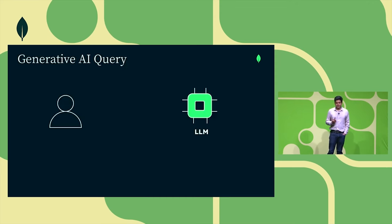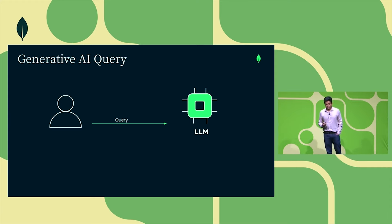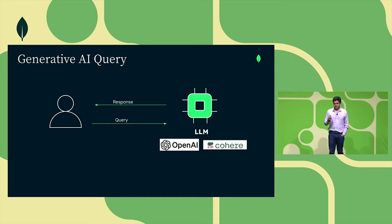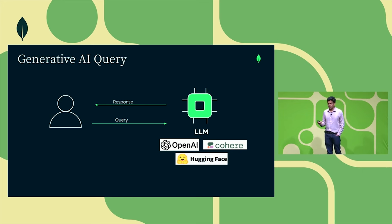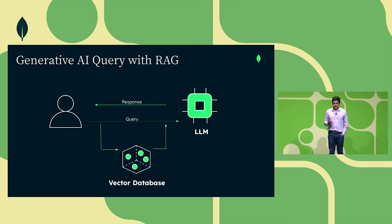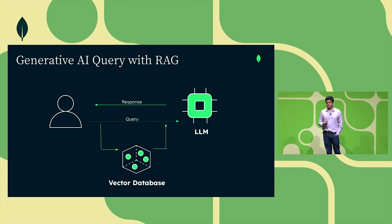Just as a primer: a typical workflow for a generative AI query starts with a user asking a question to a large language model and getting back a response. With RAG — you have models from OpenAI, Cohere, and open source models on repositories like Hugging Face — the paradigm changes: we intercept the user's query, pass it to a vector database that provides context, and pass that query along with the additional context from private knowledge sources back to the LLM.